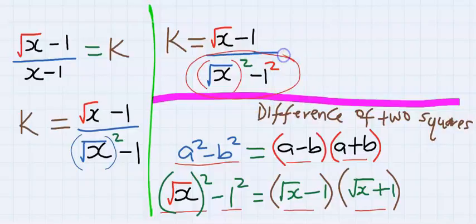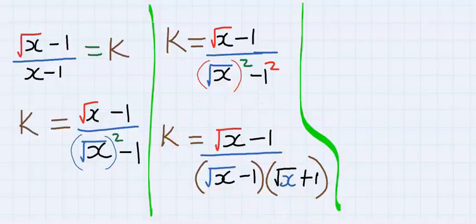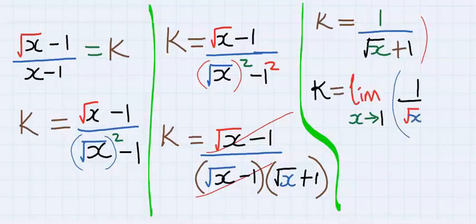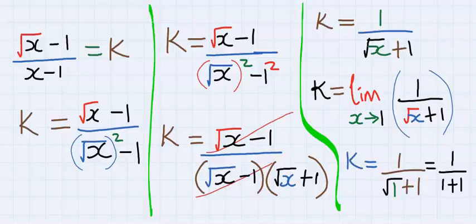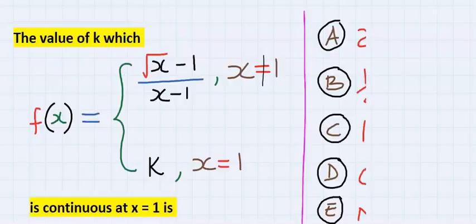Hence k is now equal to (square root of x minus 1) over (square root of x minus 1)(square root of x plus 1). The numerator and denominator cancel and we are left with 1 over square root of x plus 1. Next we take the limit as x tends to 1 and substitute 1 for x. k equals 1 over (1 plus 1), hence k equals 1 over 2. This is our answer and the answer is B.